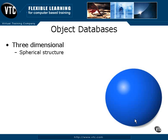An object database is essentially a three-dimensional structure. If you can imagine, within this spherical structure, you've got lines going in all directions, from all directions, so you can theoretically access any object anywhere within that sphere.